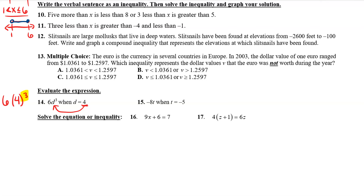The next one should be a little bit of an easier problem. All we're doing is we're plugging negative five in for the T. So you're going to replace T with parentheses negative five. And then the last two — 16 and 17 — are just solving. 16 is pretty straightforward: you're just going to get x by itself, so you're going to have to move away the nine and the six, but remember to be careful about which one you move away first. And then number 17, you are going to simplify first and then get the Z's on the same side, and then isolate Z and get Z by itself.